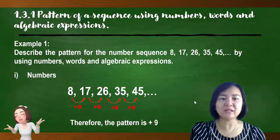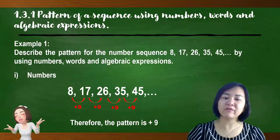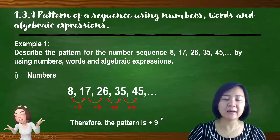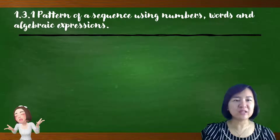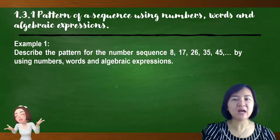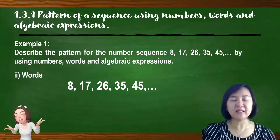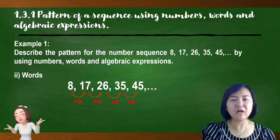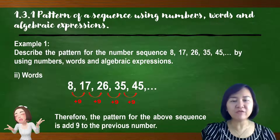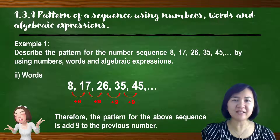We need to describe the pattern using numbers, so we write the symbol plus and the number 9. Next, we describe the pattern of the sequence using words. From the previous answer, the pattern is add 9. We write it in a sentence: the pattern for the above sequence is add 9 to the previous number.